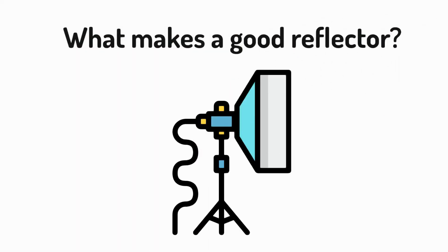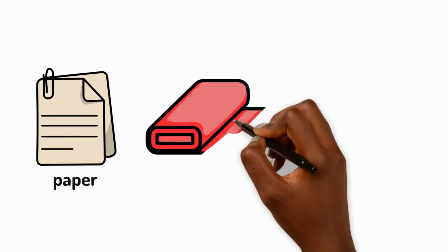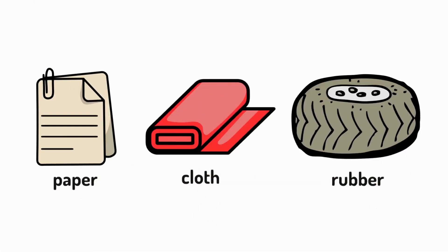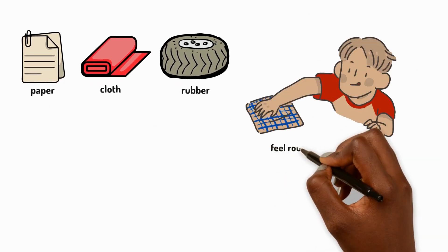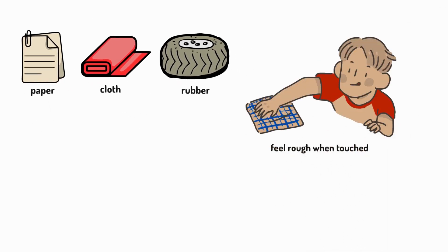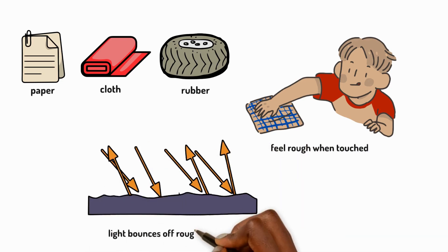Objects that reflect light do so in different ways. Paper, cloth, and rubber are dull objects with tiny bumps on their surface. They might even feel rough when they're touched. Light bounces off the rough surface and is scattered in lots of different directions. Light isn't reflected well in this way.